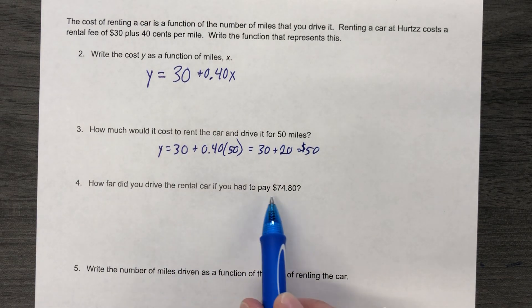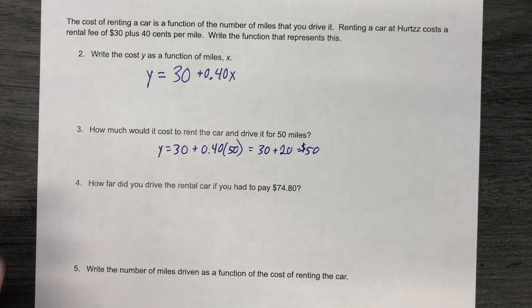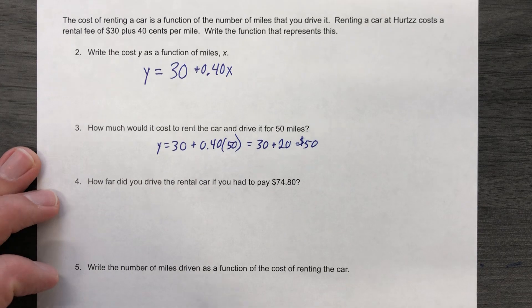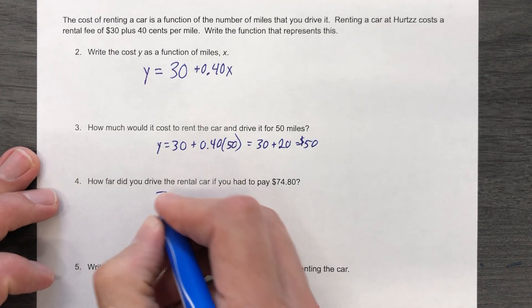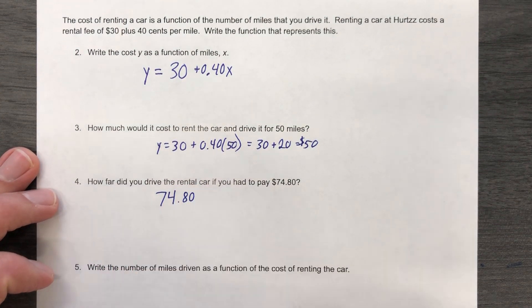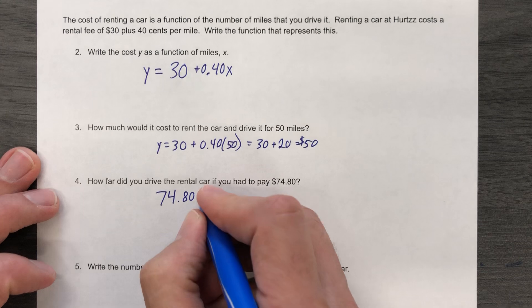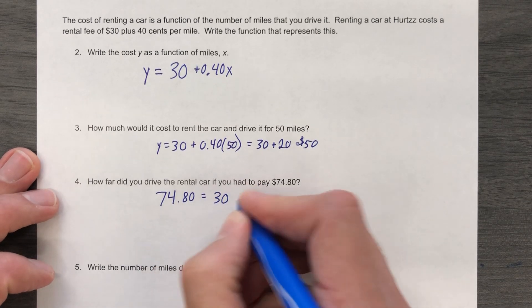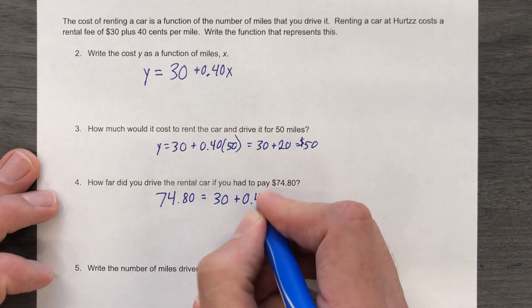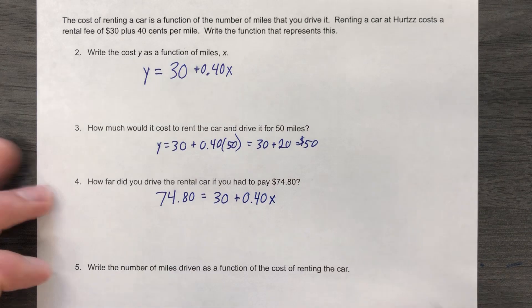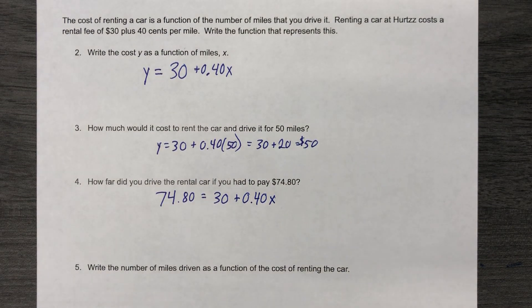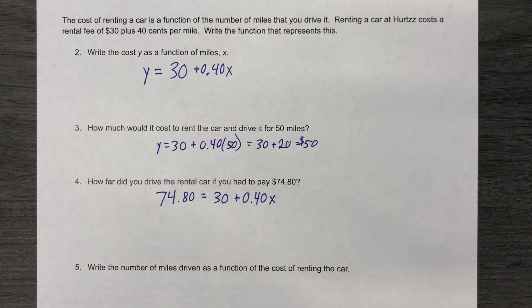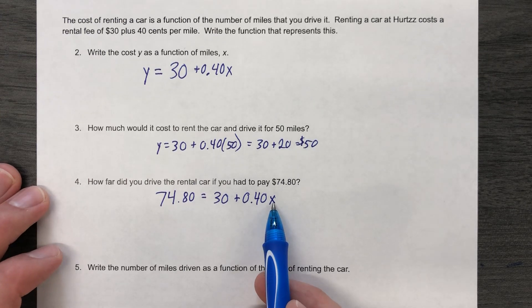Now, how far did you drive the rental car if you had to pay $74.80? Now things are different. So now they are saying you know how much you paid. How far did you drive? So now I have to solve for the other variable. That is going to be the point of inverses. We are solving for the other variable. I need to solve this for X.